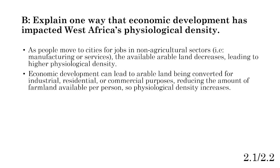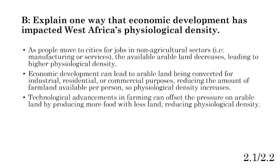Economic development can lead to arable land being converted for industrial, residential, or commercial purposes, reducing the amount of arable land per person, so physiological density will increase. If you're unsure whether it's going to increase or decrease, write it out as a fraction: people over arable land. If we decrease the land and increase the people moving into the area, that increases the fraction, so physiological density increases. Technological advancements in farming could offset this pressure by producing more food with less land, reducing physiological density.